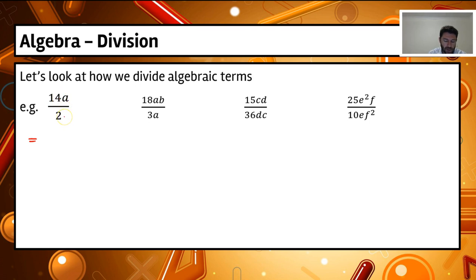So if we have a look at this, 14 divided by 2, well, that gives me 7, and then a is left on the top one there. So that one's really easy. 14 divided by 2, that's great.